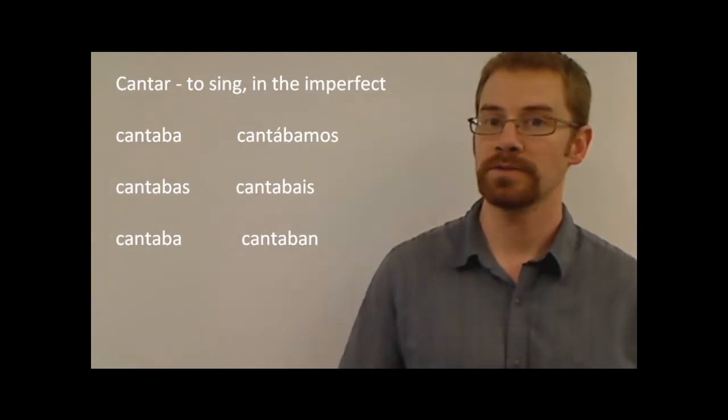So, to conjugate verbs in the imperfect, it's actually a lot easier than the preterite because there are only three irregular verbs in the imperfect, which I'll give those to you in a different video. We are going to look at how to conjugate three regular verbs in the imperfect. The first word we're going to look at is cantar. This is how you conjugate a regular AR verb in the imperfect.